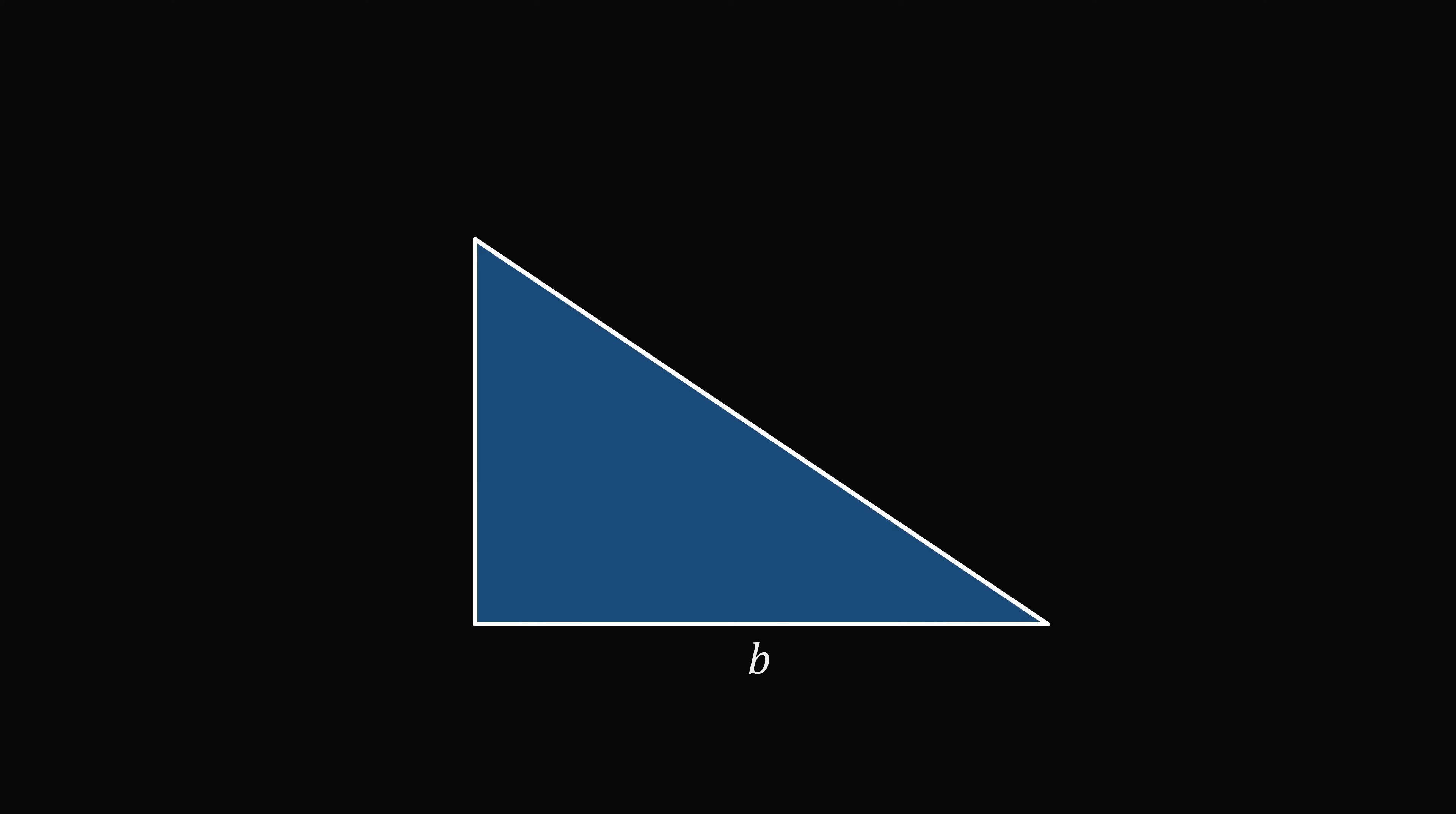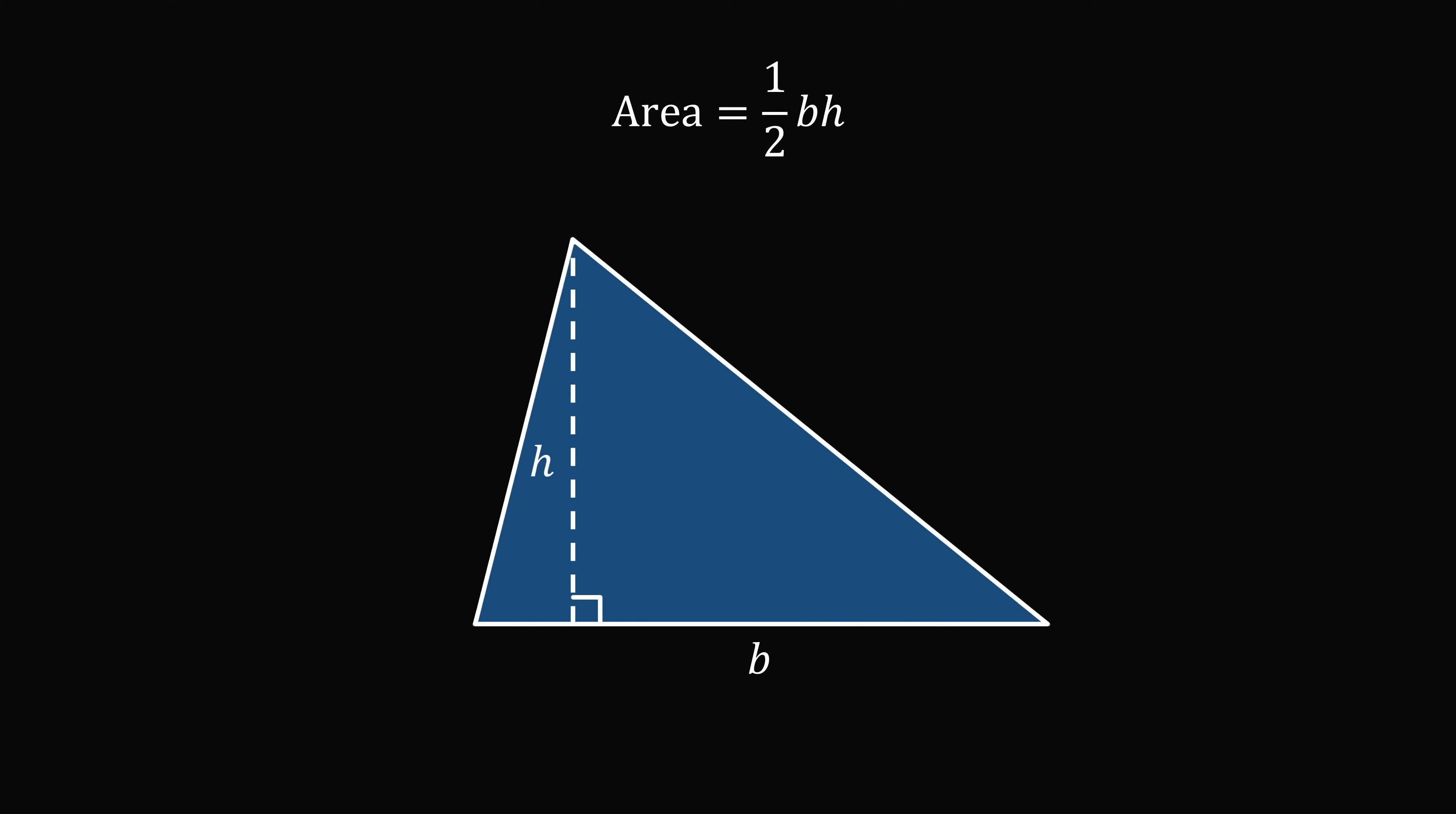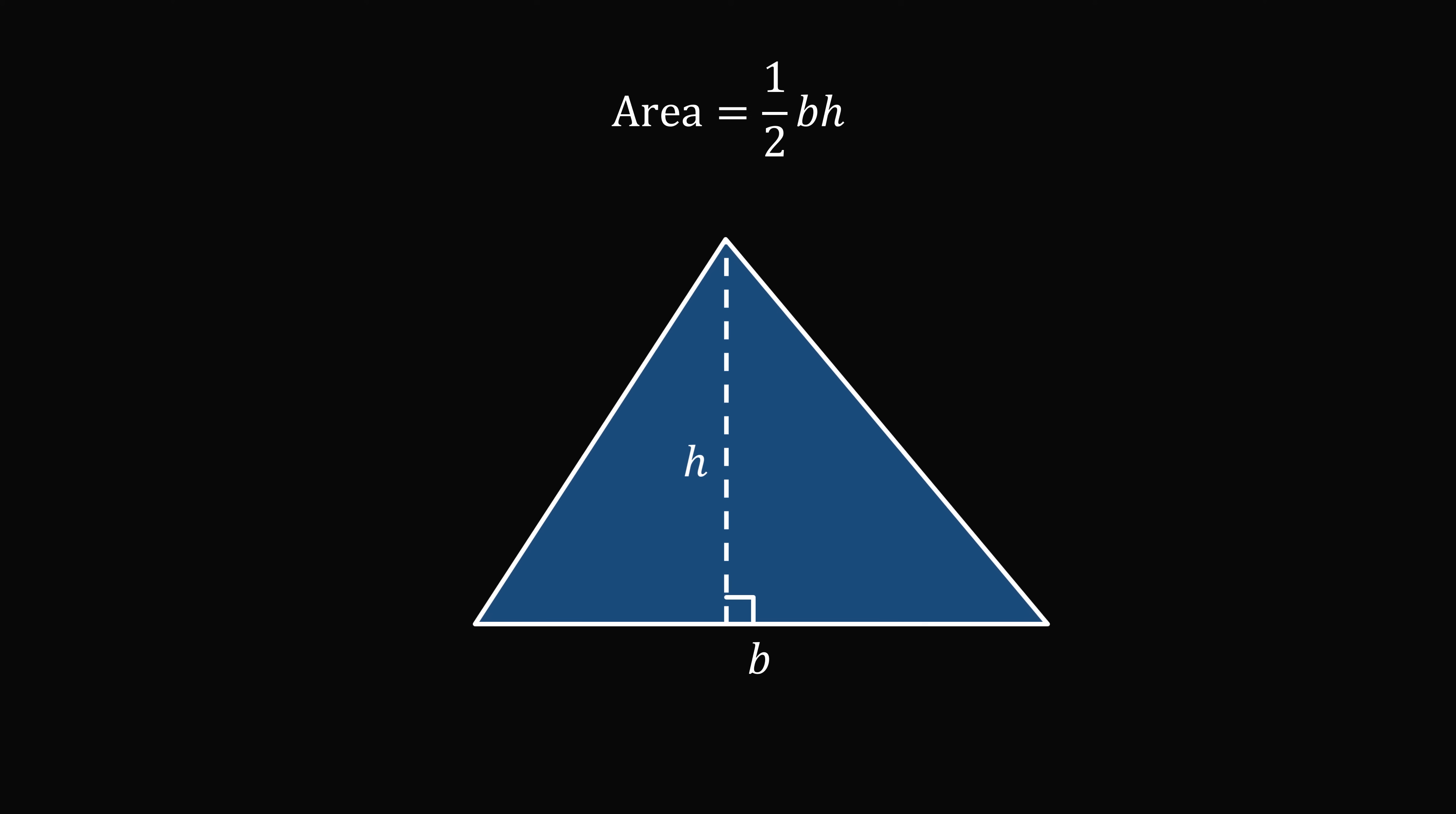In order to solve the problem, let's review the formula for the area of a triangle. Suppose we have a right triangle with a base B and a height H. The area of the triangle is equal to one half times B times H. But this formula is true not just for right triangles. So long as the height H is an altitude upon the base B from the opposite vertex, the area of the triangle is equal to one half times B times H.